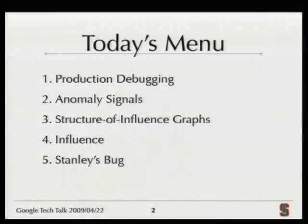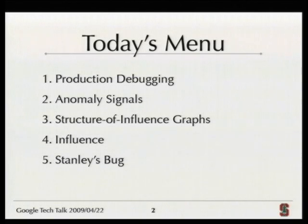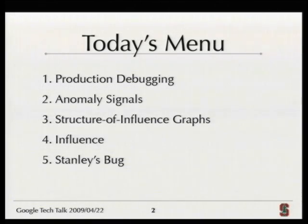So today we're going to talk about debugging in a production context, and a couple of things we're going to touch on are anomaly signals, something we call the structure of influence graph and influence, and then a bug in Stanford's robotic car that we worked on using these techniques.